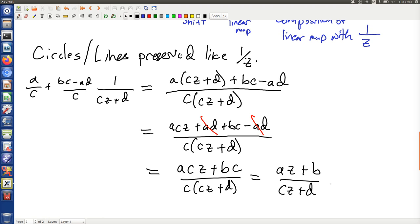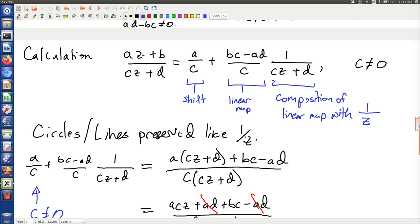Point of the matter is, of course, I needed, in order to write this down, c not equal to zero. Now if we think about what does c not equal to zero mean, it means that I don't have a linear transformation. If I have a linear transformation, then in particular this interpretation here means that I don't have any of the one over z behavior.